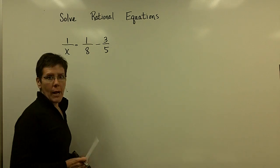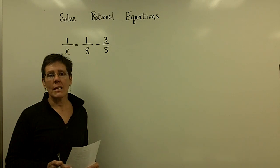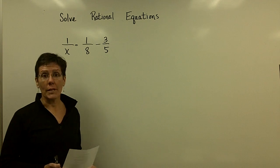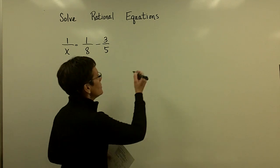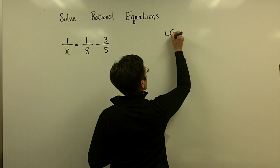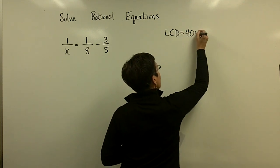So I've written a problem that's got a bunch of monomials, so the common denominator between an 8 and a 5 is 40, but I need the x too. So the least common denominator for this problem is 40x.